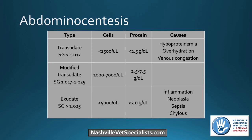Once you get the fluid, analyze it to determine the cause. Look at cell types and protein levels. For septic abdomen, compare fluid glucose and lactate to patient blood glucose and lactate. For hemoabdomen, compare the PCV of the fluid to the patient's PCV. For uroabdomen, compare potassium and creatinine of fluid to patient values. For bile peritonitis — like a ruptured mucocele — compare bilirubin in the fluid to the patient's bilirubin.